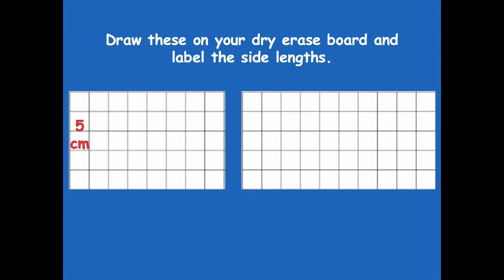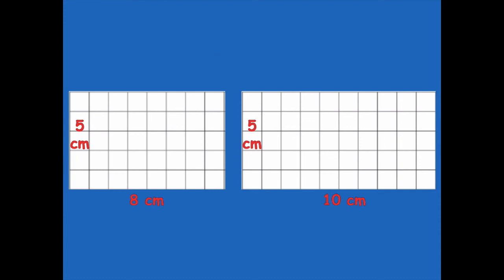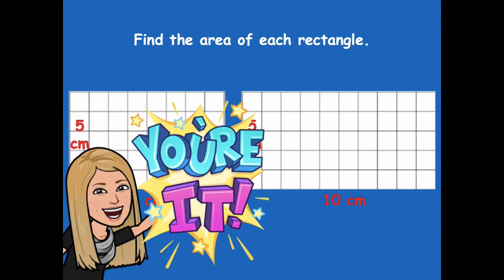Here are my side lengths: I have 5 centimeters and 8 centimeters for the first rectangle, and the second rectangle is 5 centimeters and 10 centimeters. Go ahead and pause the video, find the area of each rectangle, and then click play when you're ready to go over it together.